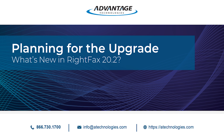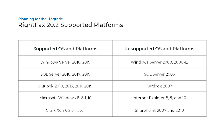Now let's talk about planning for the upgrade. RightFax 20.2 now fully supports Windows Server 2019 and no longer supports Windows Server 2008. RightFax 20.2 also fully supports Outlook 2019. The system requirements for RightFax can be downloaded from the Advantage Technologies website.